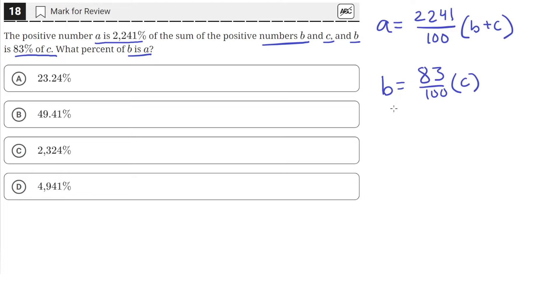Or actually, let's rearrange this equation here so that we can write C in terms of B. Then we'll be able to plug that value of C into the first equation so that we'll only have B's in this equation. Then we can find what percent of B is A.